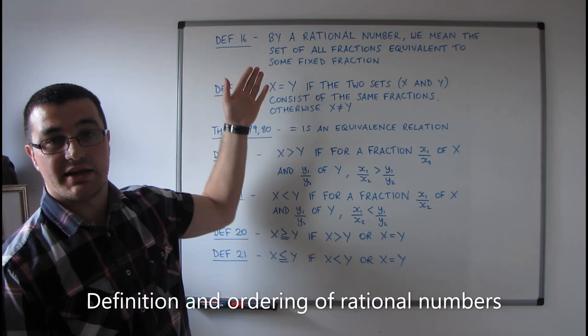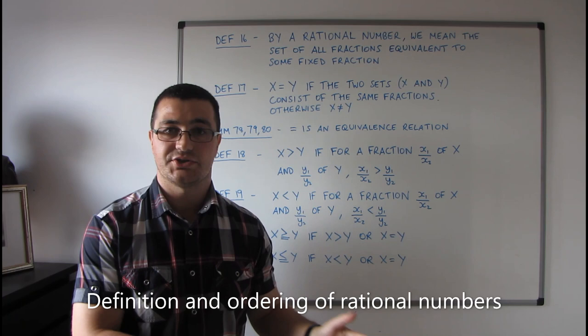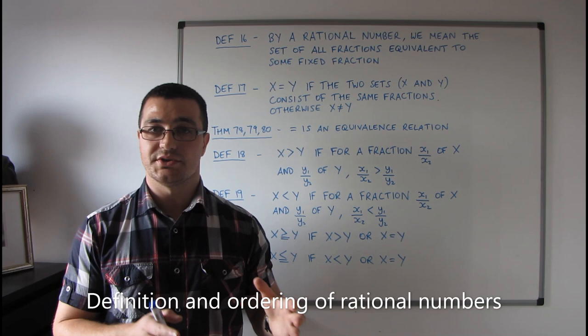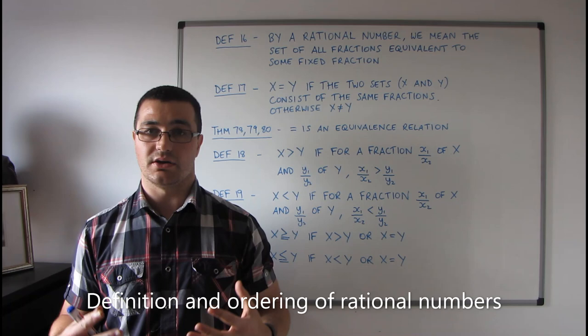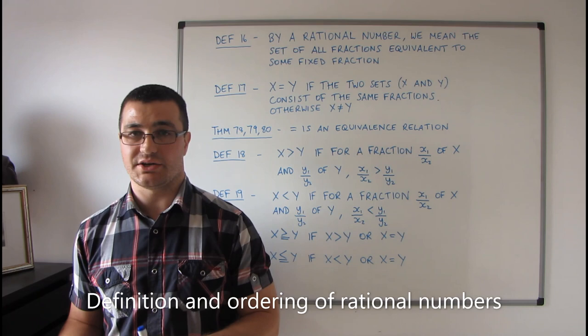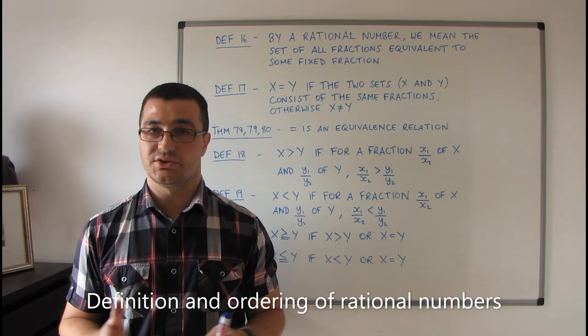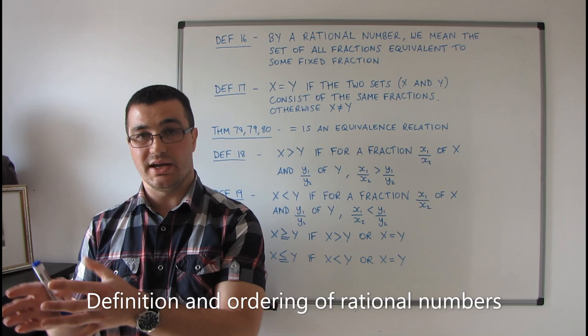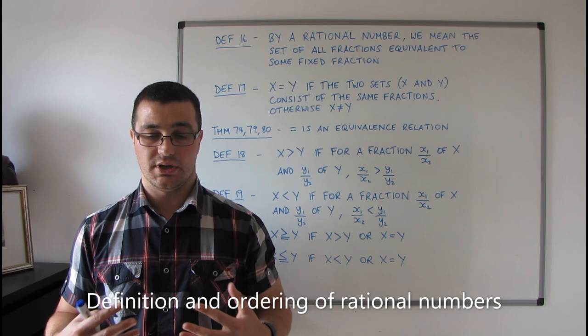There's a very strict distinction to be made between fraction and rational number. A fraction, as we've defined it, is an ordered pair of natural numbers, whereas a rational number is an equivalence class of fractions. In everyday speech we often use these terms synonymously, but here we've got to make a distinction. A fraction is defined one way, a rational number is defined differently — they are completely different things.